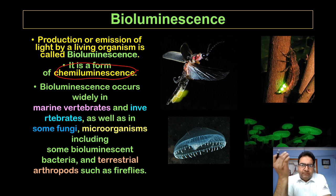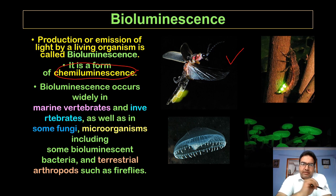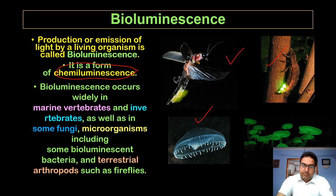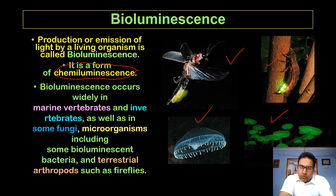Bioluminescence is widely seen in invertebrates such as fireflies and various insects. We also have jellyfish, and it is even found in mushrooms which belong to the plant kingdom. There are various microorganisms as well which are bioluminescent.